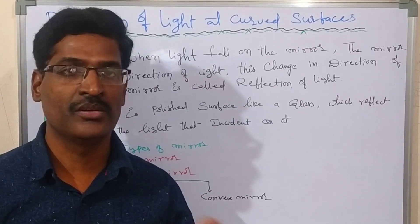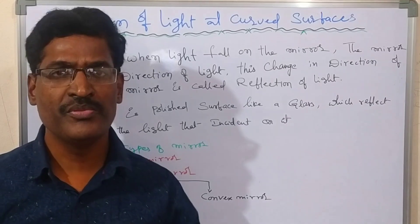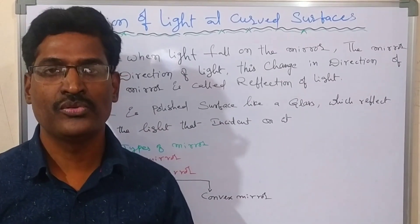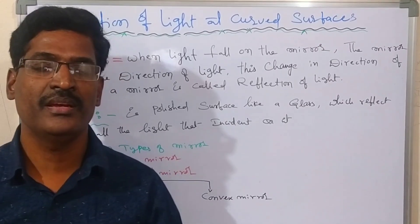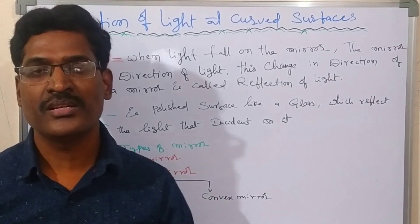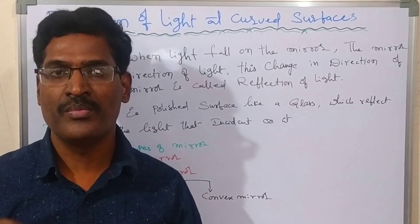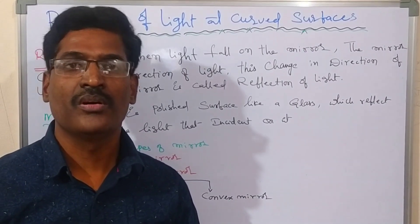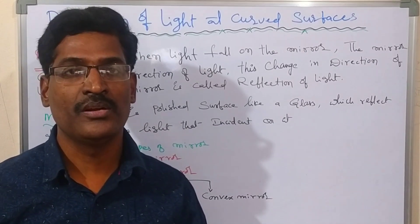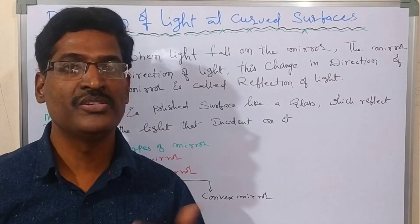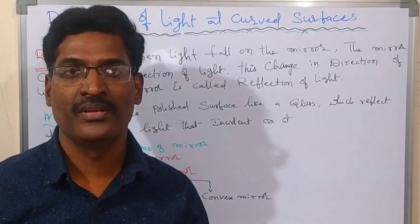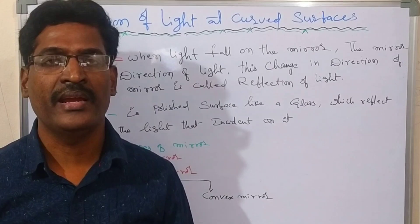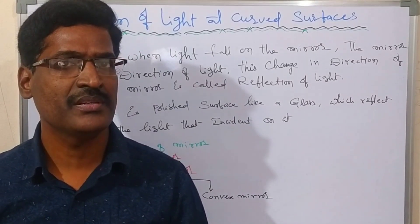Reflection of light at curved surfaces. Before going to define reflection of light, we have to recall what we completed in earlier classes. In earlier classes, we completed image formed in the plane mirror and image formed in the curved mirror. We also have doubts about when image is formed in the bulged surface — if the image formed in the bulged surface and image formed in the plane mirror are the same or different.